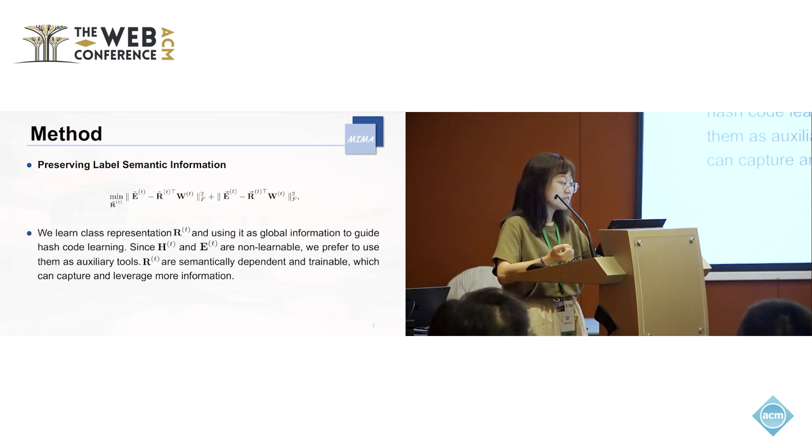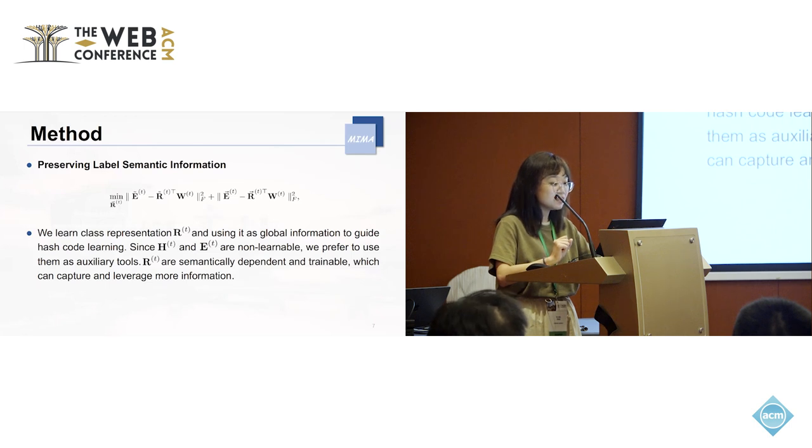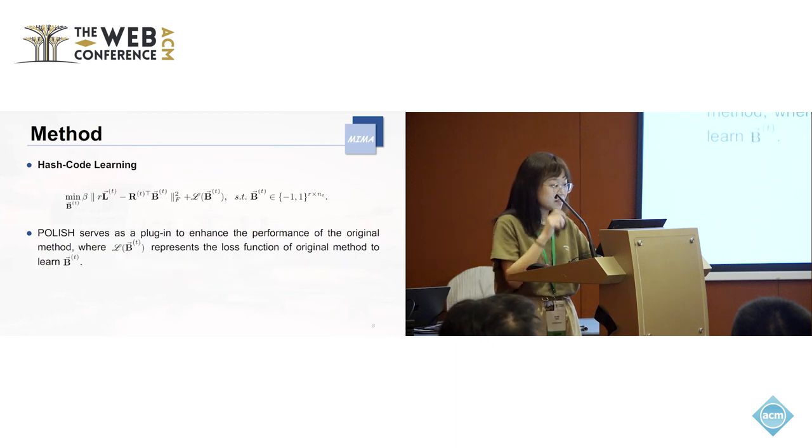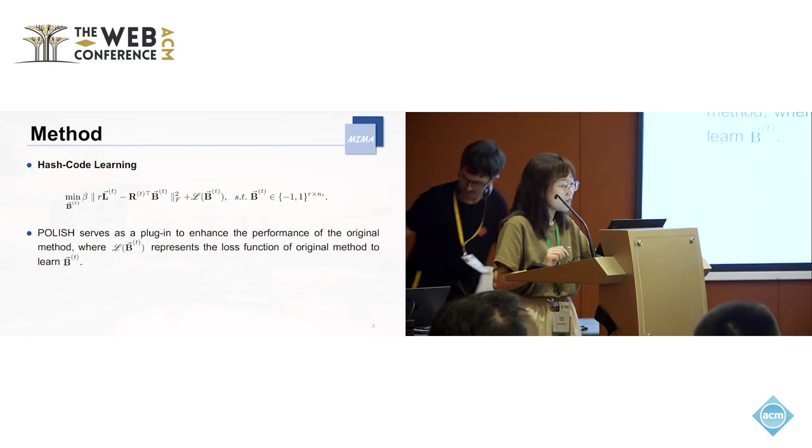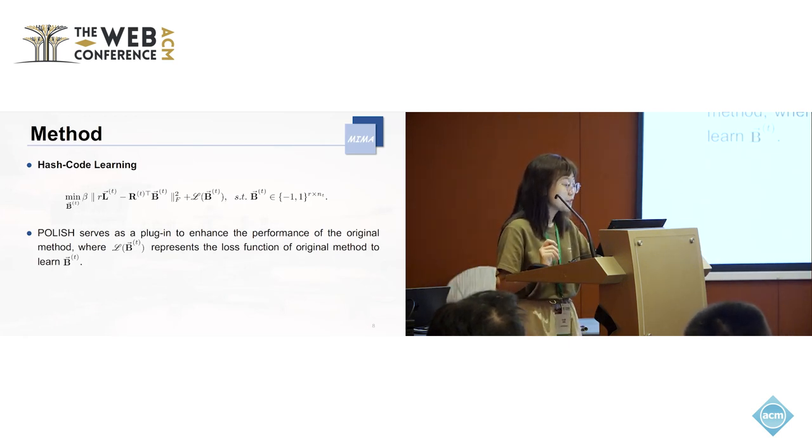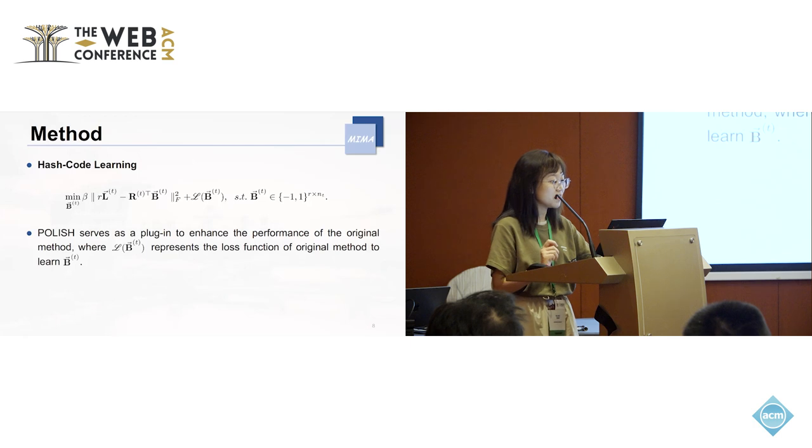It's worth mentioning that we learn the class representation R and use it as the global information to guide the hash code learning. Because H and E are non-learnable, we prefer to use them as auxiliary tools. Now we have generated the representation of classes, and then we want to use them to learn the hash code of samples.